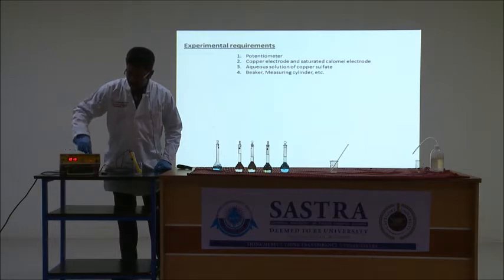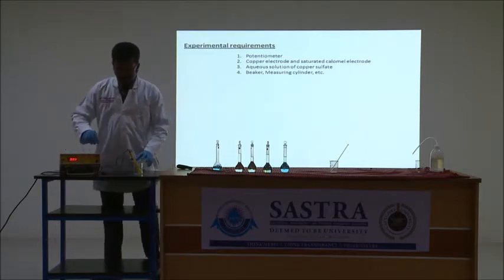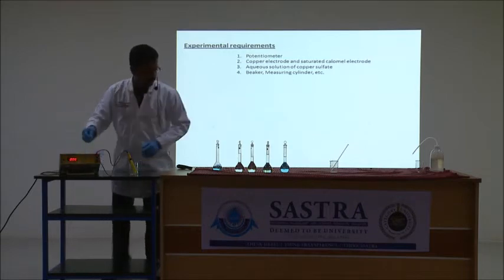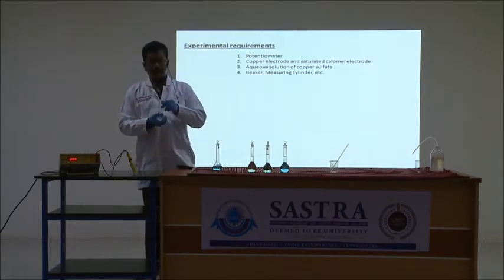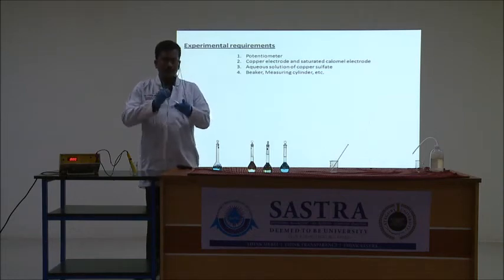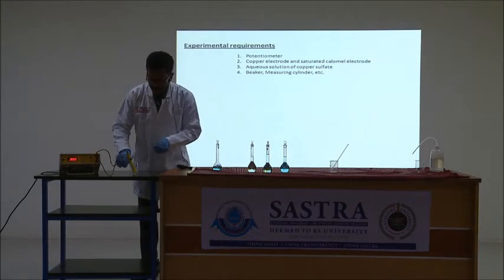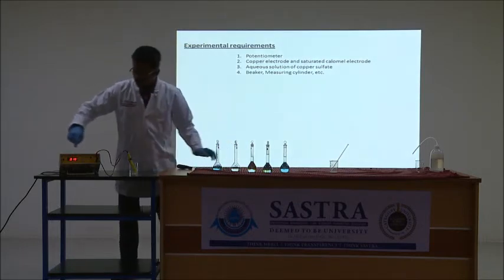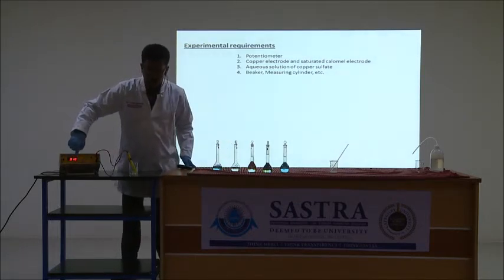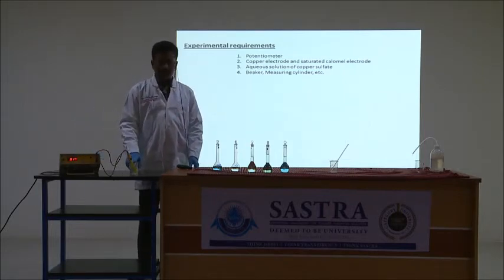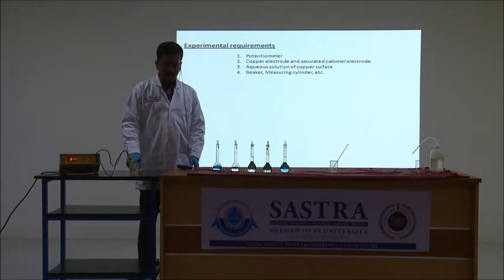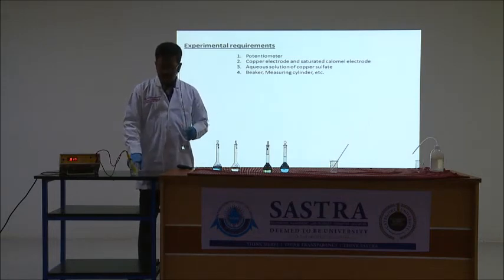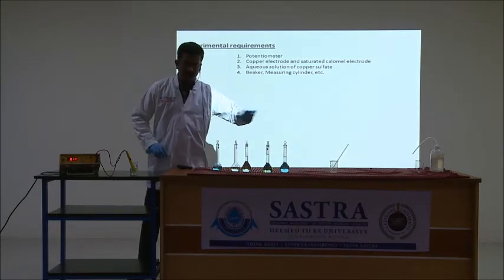Once the instrument is calibrated, change the knob towards read. Now connect both the electrodes with the instrument and add approximately 50 ml of 0.01 molar copper sulfate solution. It shows a potential of 0.018 volts. Once this measurement is completed, discard this solution, wash the beaker and the electrode with distilled water, then take the 0.02 molar solution, rinse the beaker and the electrode, discard the solution, and add 50 ml and measure. Like this, measure all the concentrations.